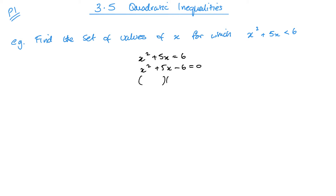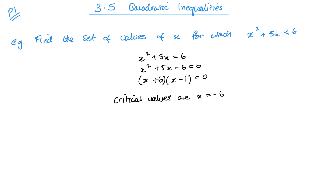Once I make it equal to 0 then I can solve this equation. Firstly check if you can factorise, and if not you might need to use the formula, but a lot of the ones we're going to do today will be factorising. Looking at this one, it's got to be a 6 and a negative 1. That'll give me my negative 6 and also my positive 5x. So my critical values are x equals minus 6 and x equals positive 1. Now I want to think about my inequality, so x squared plus 5x minus 6 is less than 0.